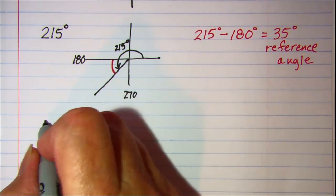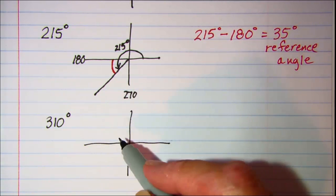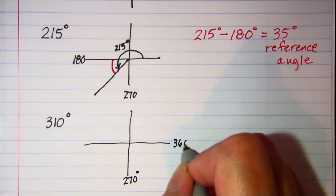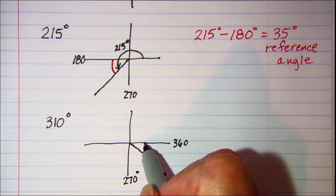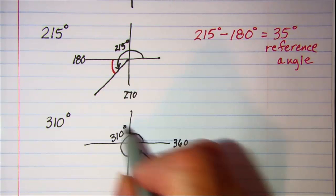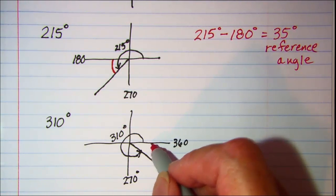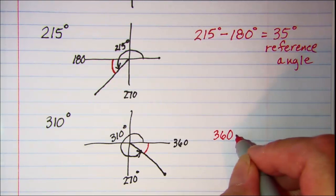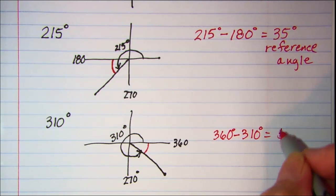If our vector measures a 310 degree angle, 310 is more than 270 but less than 360, so this vector would be in quadrant 4. We measure from the positive x-axis counter-clockwise around to the vector. The reference angle is the acute angle between the vector and the x-axis, found by taking 360 minus 310. So we have a 50 degree reference angle.